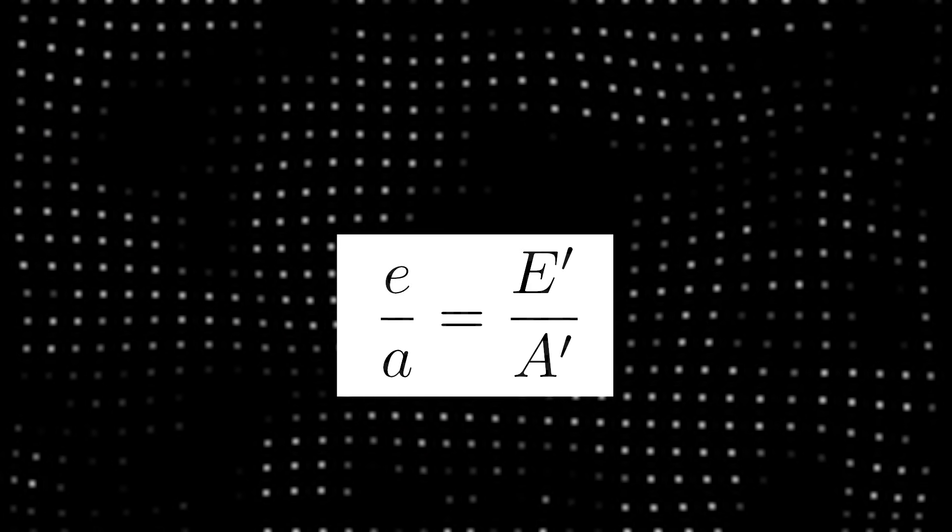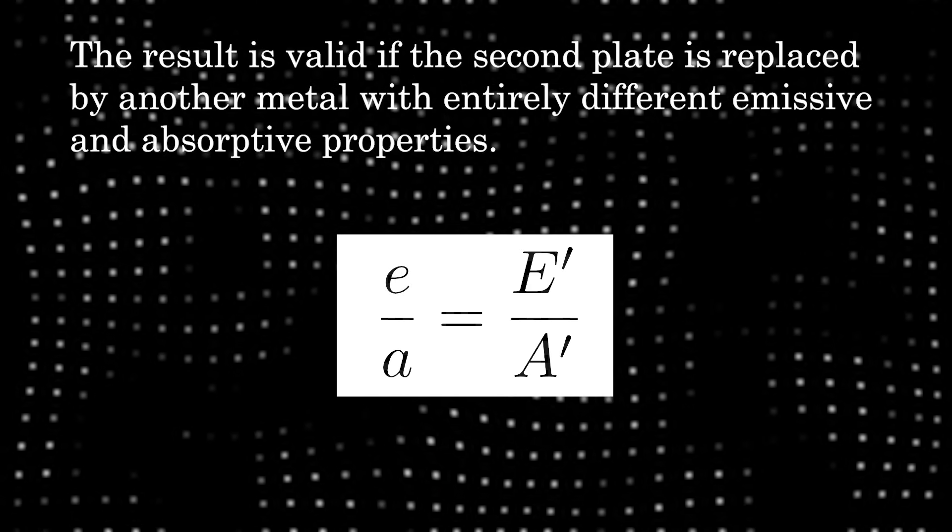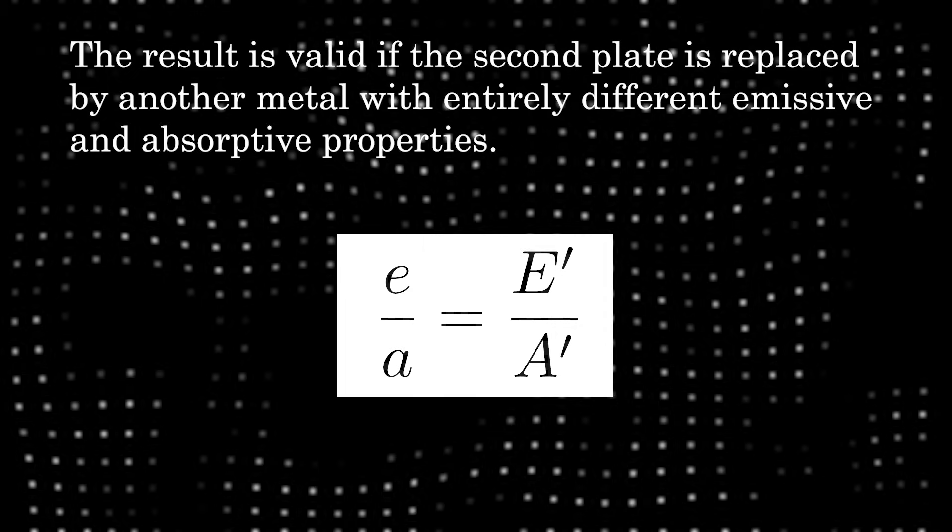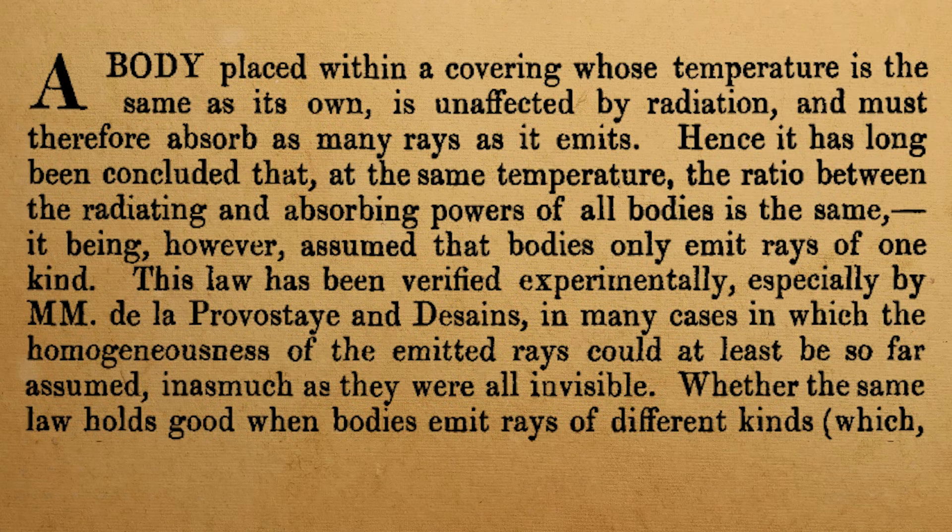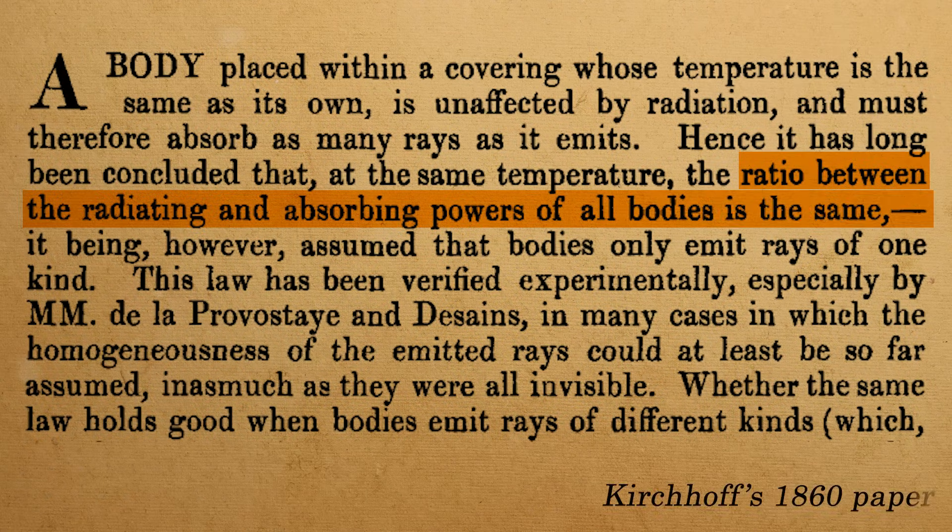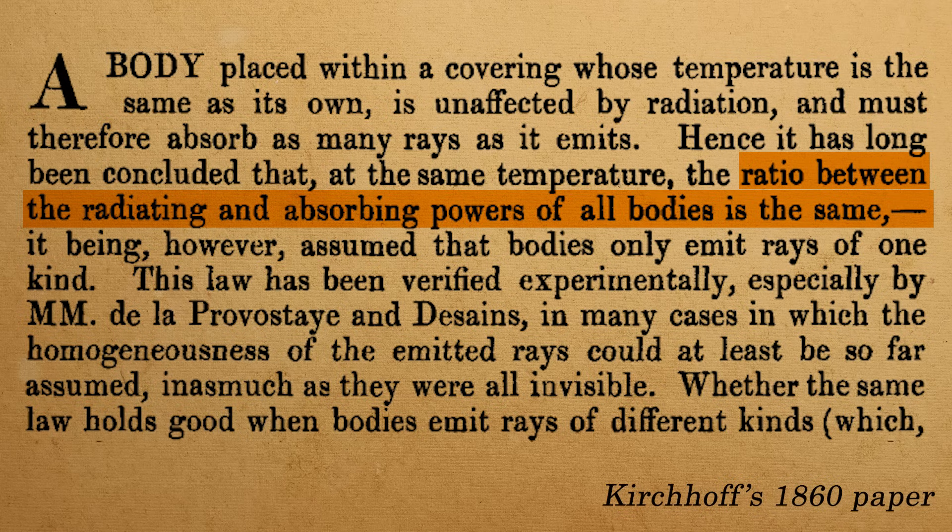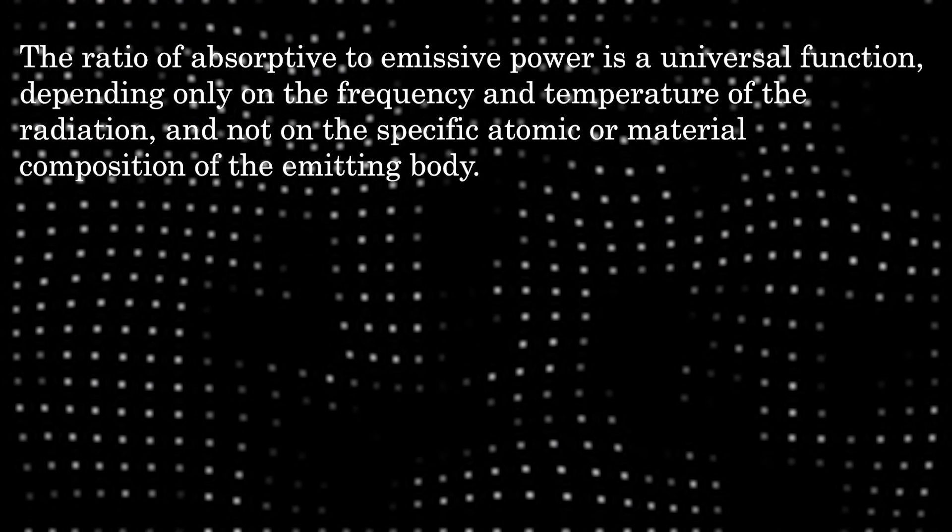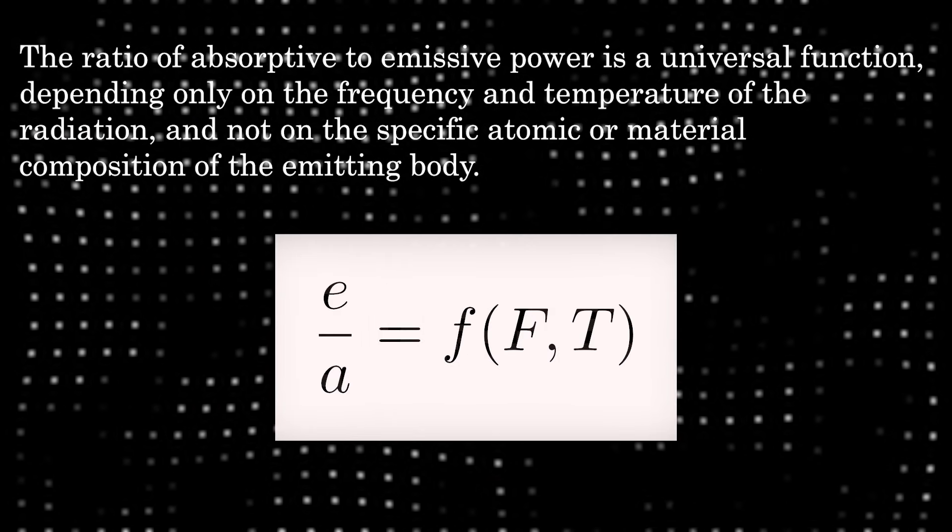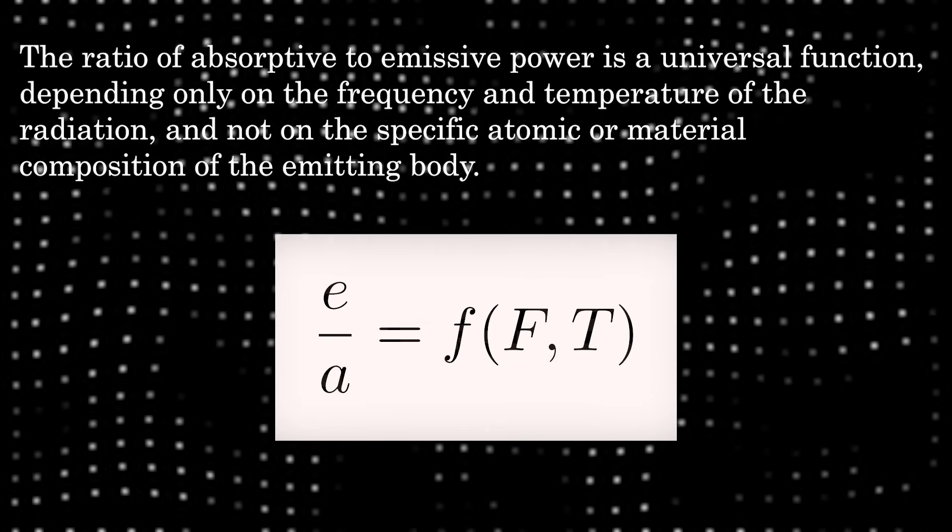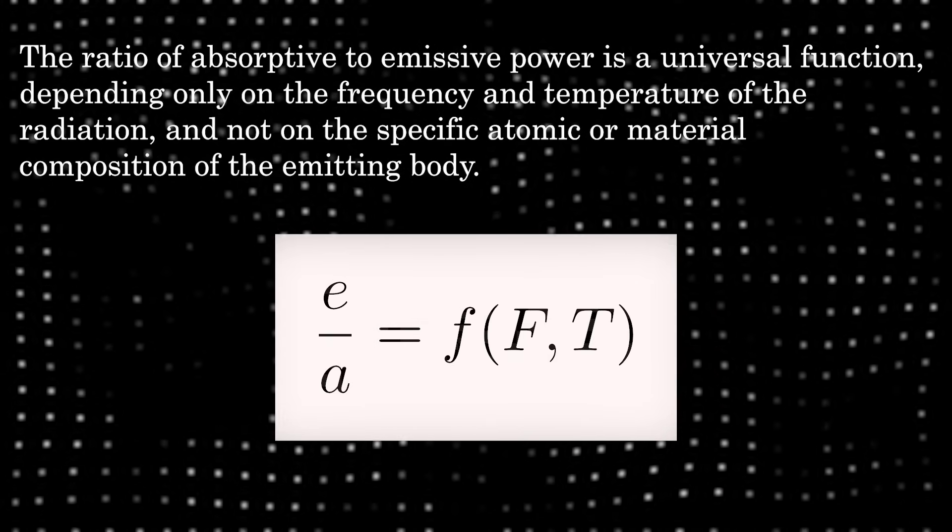Even more striking is that this result remains valid if the second plate is replaced by another metal with entirely different emissive and absorptive properties. This led Kirchhoff to a general conclusion. For a given temperature and wavelength, the ratio of emissive power to absorptive power is the same for all bodies. In other words, this ratio is a universal function, depending only on the frequency and temperature of the radiation and not on the specific atomic or material composition of the emitting body.